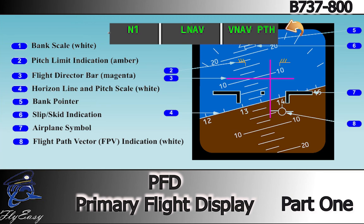Flight mode annunciations are displayed in the top three windows on the PFD. Armed modes appear in white subscript format; active modes appear in green. These annunciators pertain from left to right to the auto throttles, roll modes, and pitch modes. When a mode first becomes active, it will be highlighted by a green box for 10 seconds.